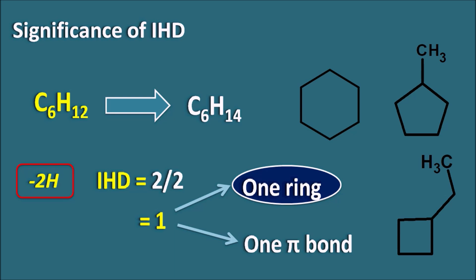Whenever we know the IHD value, we can determine a few features of the structure. If the IHD value is 1, the structure may have either a cyclic ring or a pi bond. Similarly, if a compound has an IHD value of 2, it indicates that it is having either two pi bonds or two cyclic rings, or it may have one cyclic ring and one pi bond. In this way, we can use the IHD value to assess the structural features of compounds — whether a pi bond is present or a cyclic ring system is present or not.